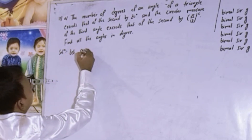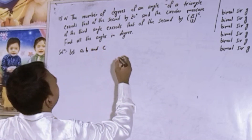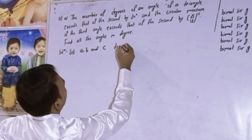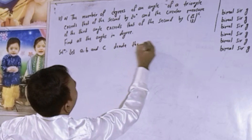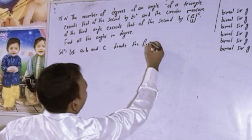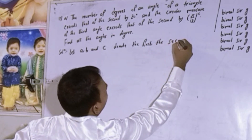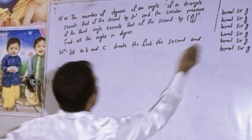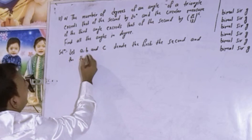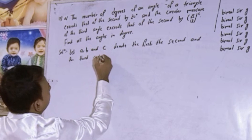Let A, B, and C denote the first, second, and third angles of the triangle.